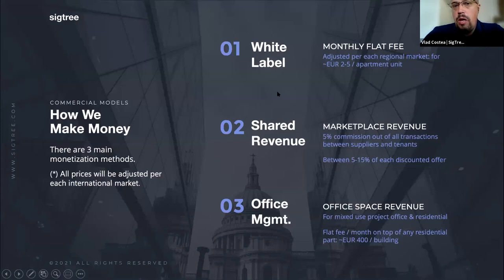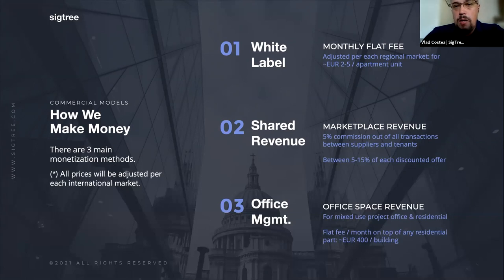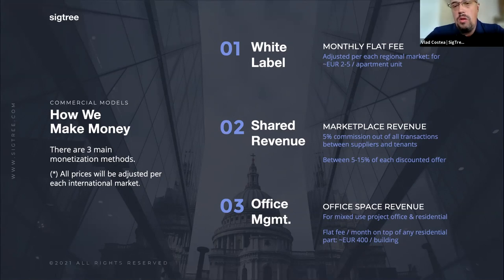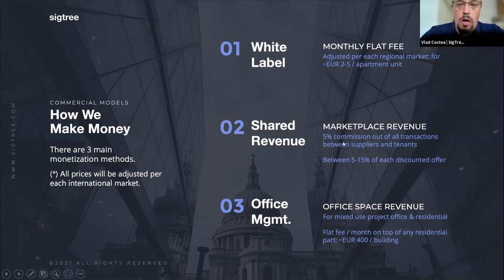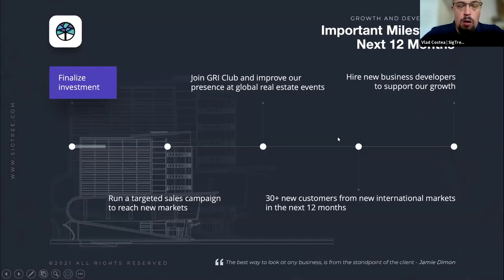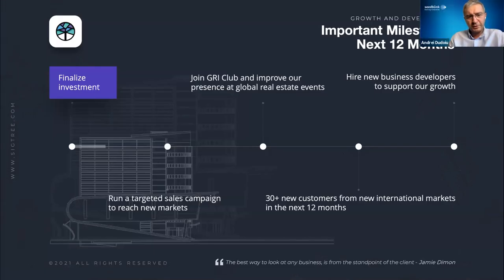Regarding how we make money: there is a flat fee per apartment unit, with an adjustment between the Romanian market and our international expansion targets, plus a commission from marketplace transactions. Offers in the marketplace are provided with consistent discounts because suppliers get a new direct-to-consumer sales channel and are happy to offer big discounts to access this new customer base. For office space management, there is a monthly price per building.